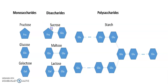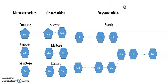Sucrose is formed by a combination of fructose and glucose. Maltose is formed by the combination of two glucose molecules. Lactose is formed by the combination of galactose and glucose. These together are considered to be simple sugars. The complex sugar, which is polysaccharide — an example of it is starch.